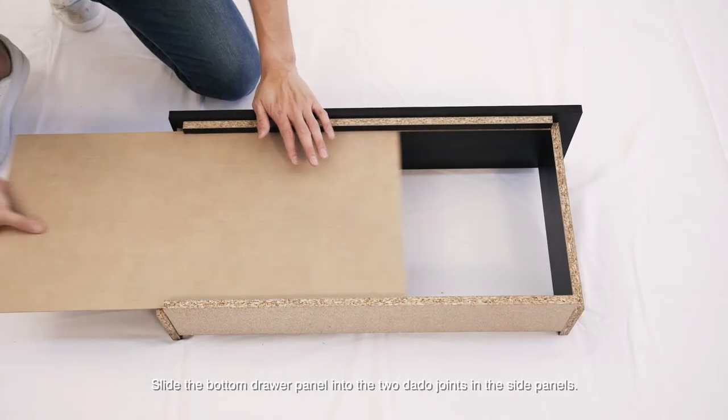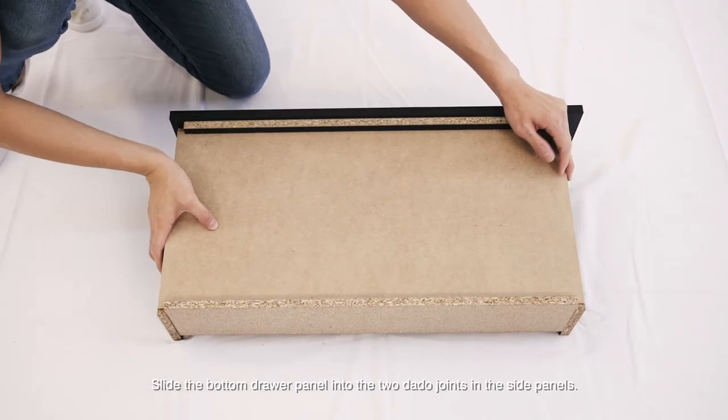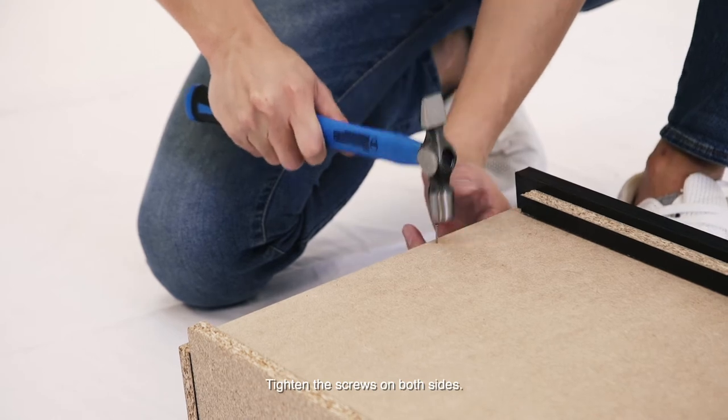Slide the bottom drawer panel into the two dado joints in the side panels. Tighten the screws on both sides.